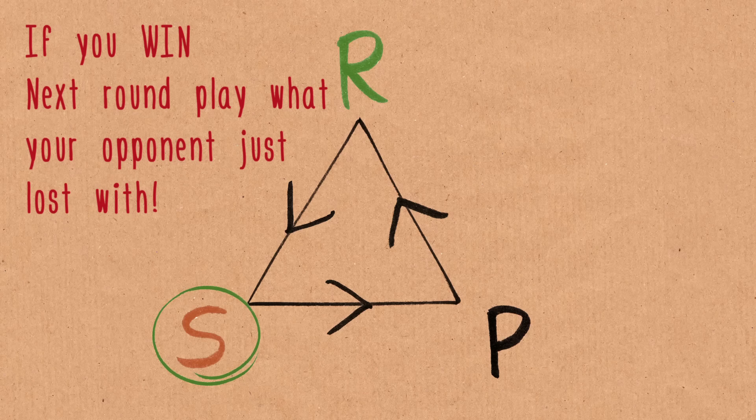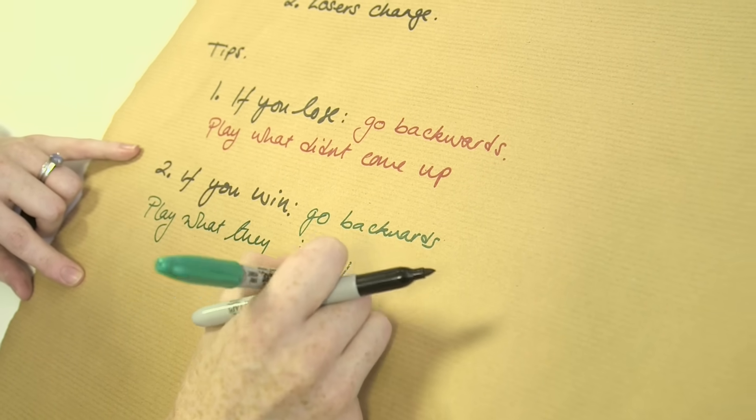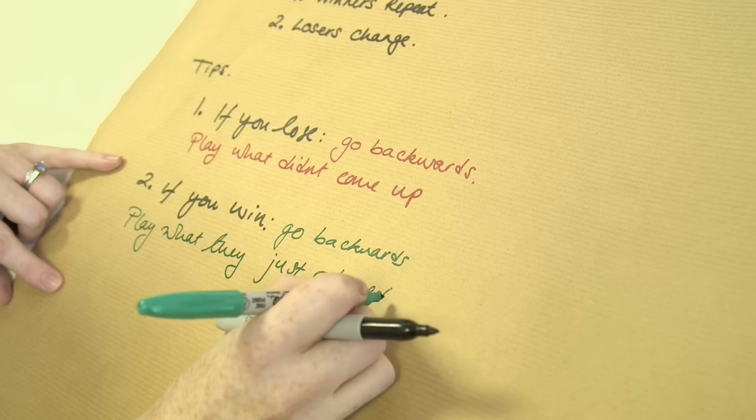So in general then, if you're cycling through rock, paper, scissors, your best strategy is to go backwards and go scissors, paper, rock and cycle through that way.